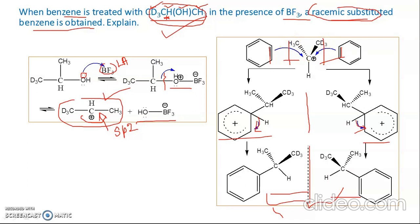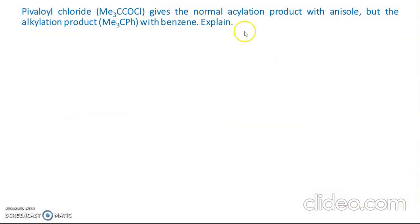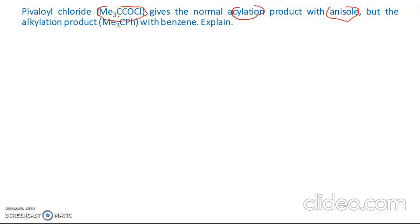The third problem: pivaloyl chloride (Me3C–COCl) gives the normal acylation product when treated with anisole (methoxybenzene), but when treated with benzene the product is the alkylated compound Me3C–Ph rather than the acylated product. So the difference is: with anisole you get the acylation product, but with benzene you get the alkylation product. We need to explain why.